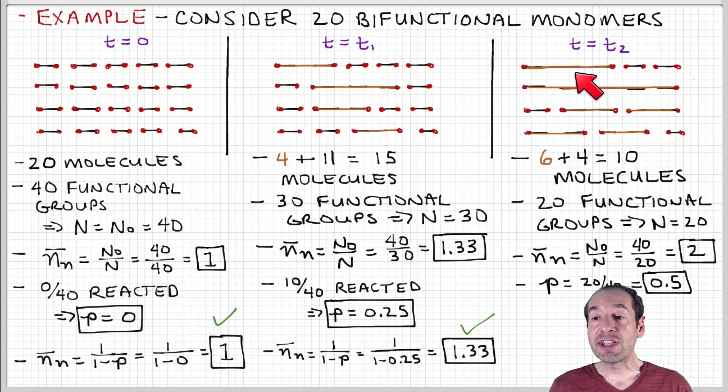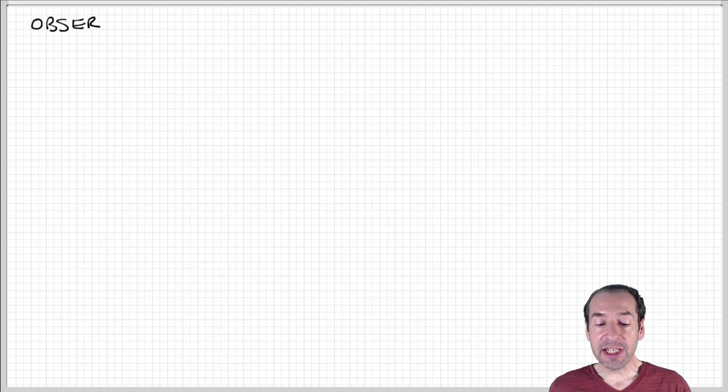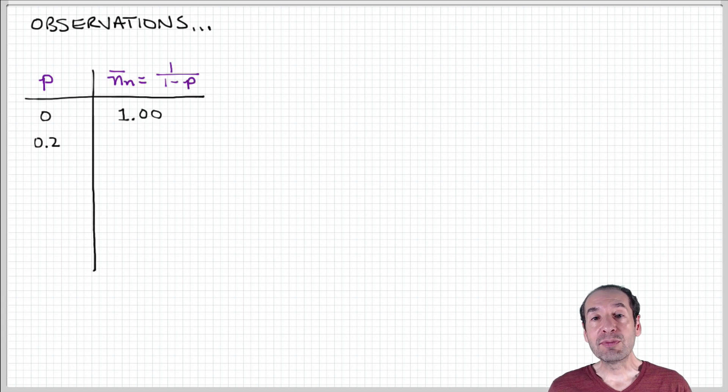Our extent of reaction we can get by counting the number of reacted functional groups. So how many of these red dots have disappeared? Half of them have disappeared, 20 over 40, and so that corresponds to an extent of reaction of a half. Again, you can show for yourself that if you plug in to the Carruthers equation, that will correspond to a degree of polymerization of 2.